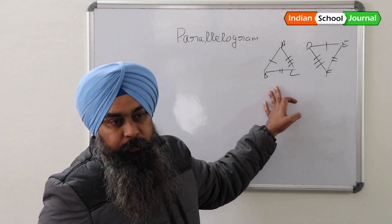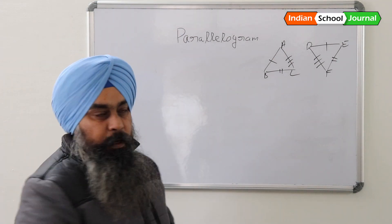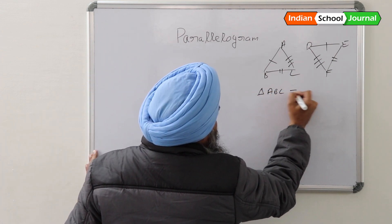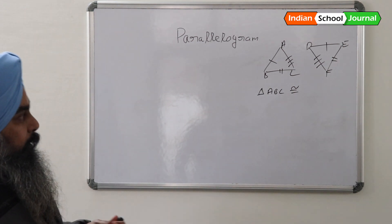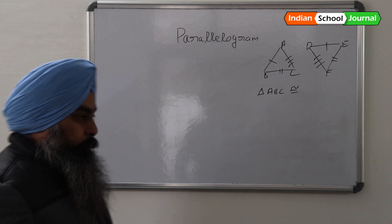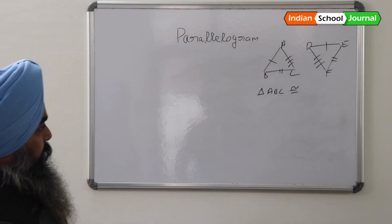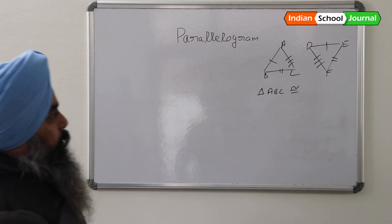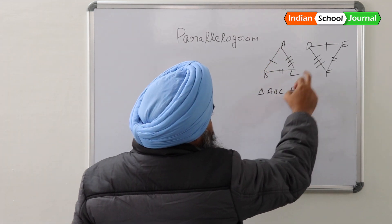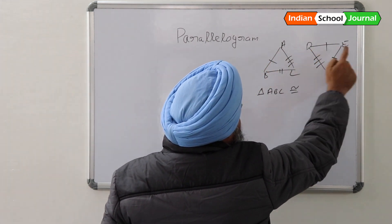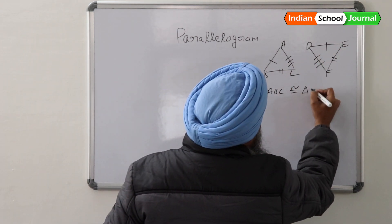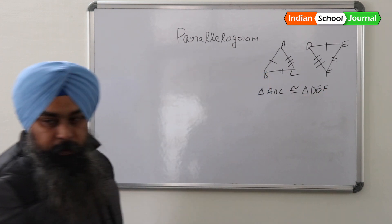When both triangles are overlapped onto each other, triangle ABC is congruent to triangle DEF. In this case, A corresponds to D, B corresponds to E, and C corresponds to F. So we write it as triangle ABC congruent to triangle DEF.